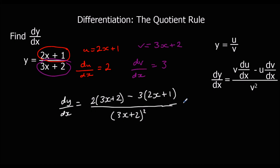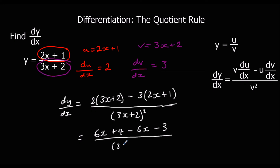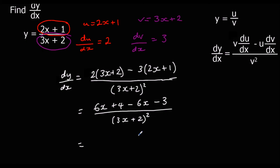I'm going to simplify this one by expanding the top line. So 2 times 3x is 6x, two twos are 4, minus 3 times 2x, so negative 6x, and negative 3 times positive 1 is negative 3. Leaving the bottom as it is: 3x plus 2 all squared. Collecting the like terms from the top: 6x take away 6x is nothing, 4 take away 3 is 1. So we're left with 1 over 3x plus 2 squared.